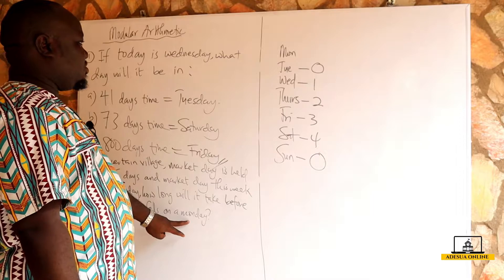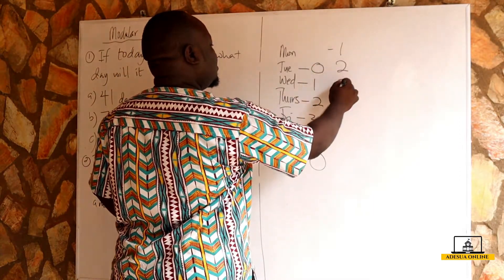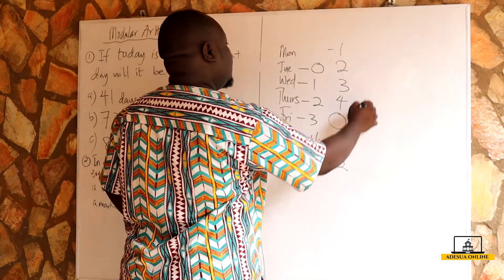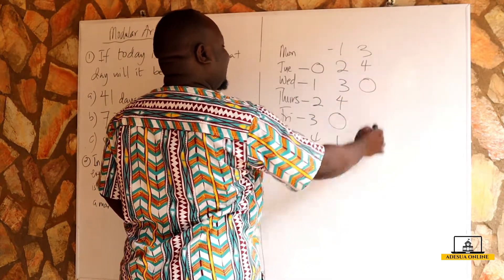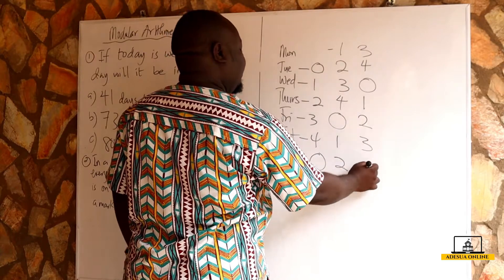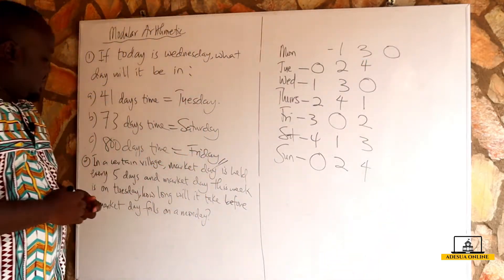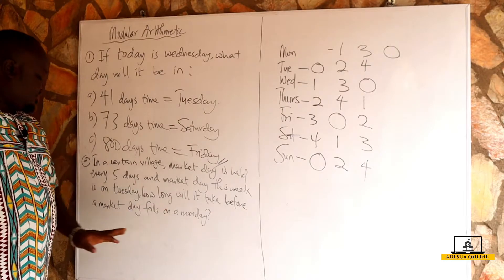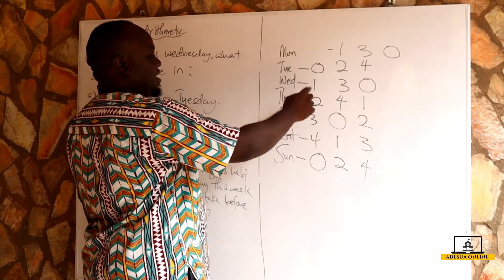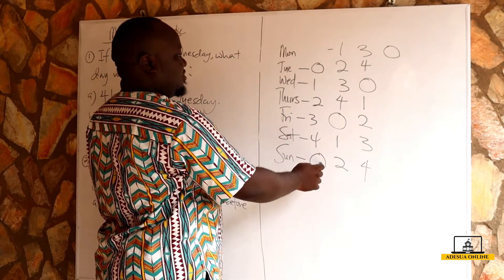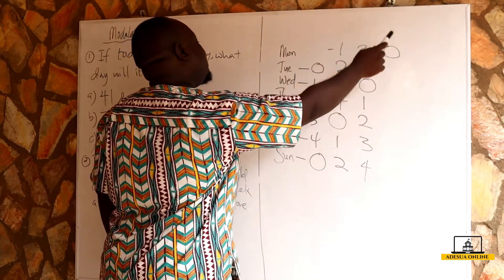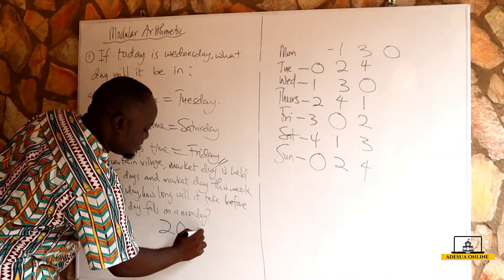Continuing: one, two, three, four — the next market day is on Friday. Continue again: one, two, three, four — the next market day is on Wednesday. Continue: one, two, three, four — the next market day falls on a Monday. The question asked how long it will take, so counting from Tuesday: one, two, three... all the way to twenty. The answer is 20 days.